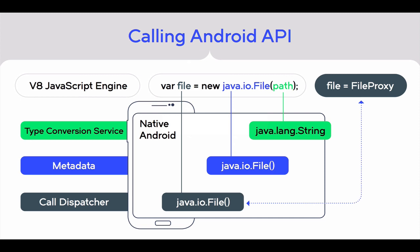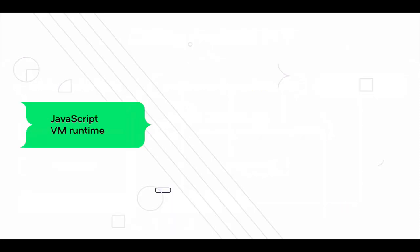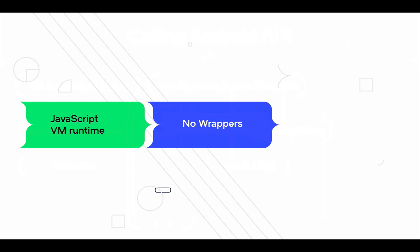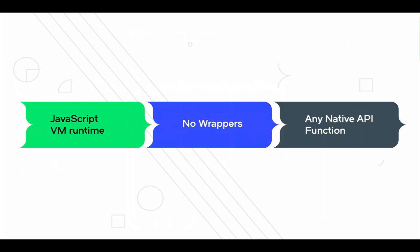When a method is called on this proxy, it is delegated to the underlying native object. To summarize: the JavaScript code doesn't get compiled, but instead it is interpreted at runtime. There is no need for any wrappers to access the native API, and as a result, there are no limits in terms of which native API functions your app can call. This is the foundation of the NativeScript framework.